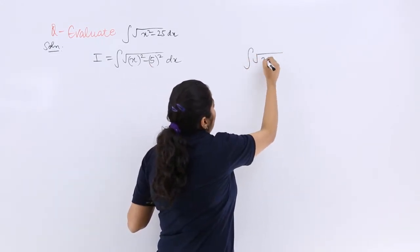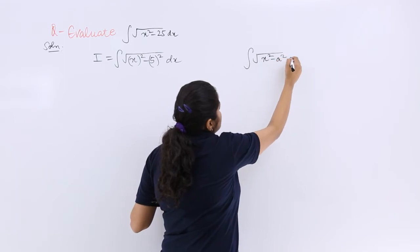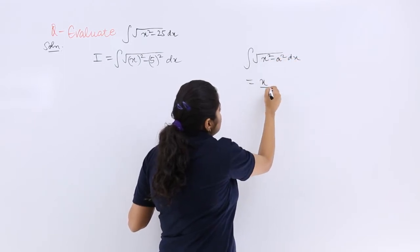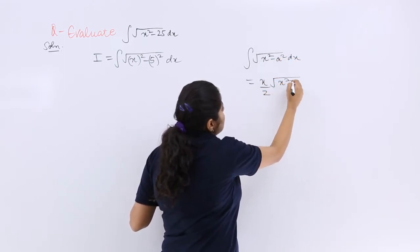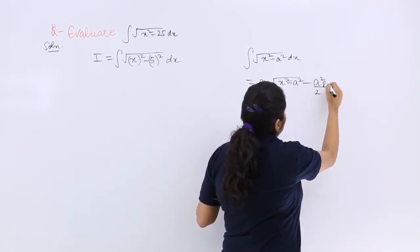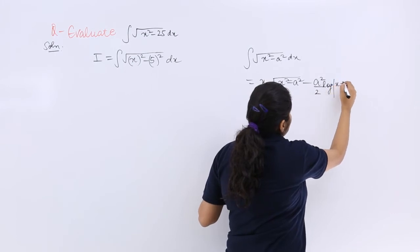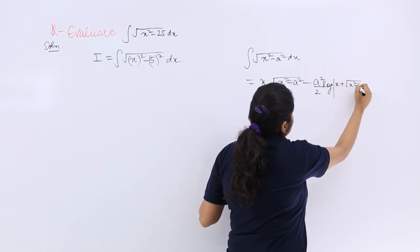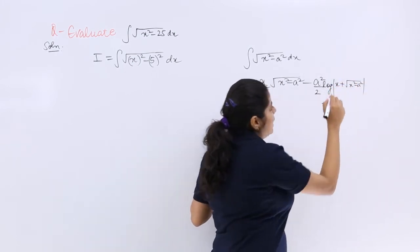What is it? Integration of x square minus a square with respect to x is x by 2 under root x square minus a square minus a square by 2 log x plus under root x square minus a square plus C.